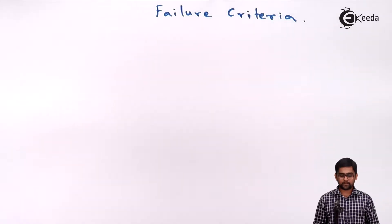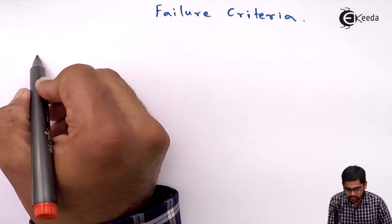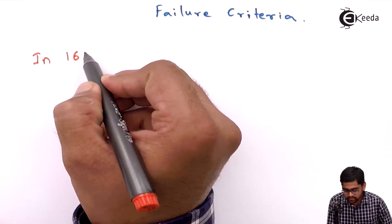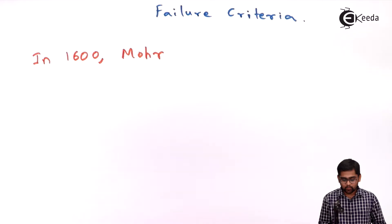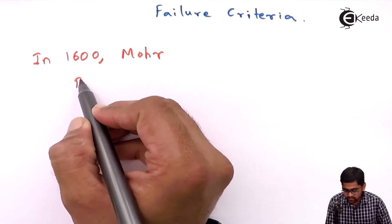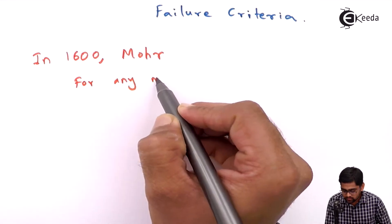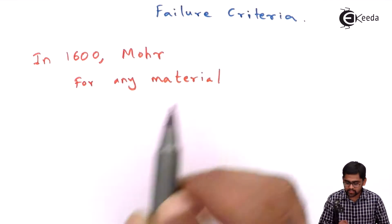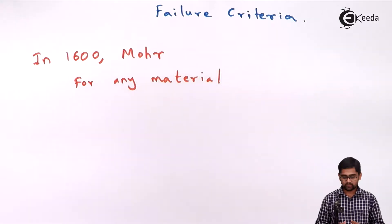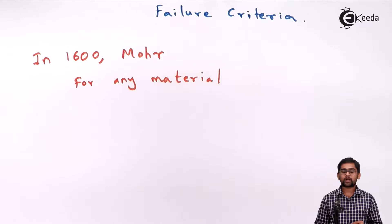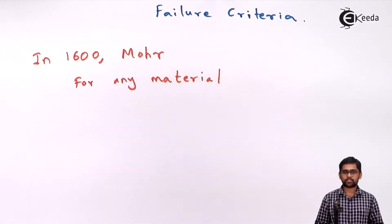Before discussing the failure criteria, we go back to history. In the 16th century, a scientist named Mohr pointed out that for any material, if it has been stressed or under an application of a load, there will be failure inside the material which happens under a critical combination of normal and shear stress.